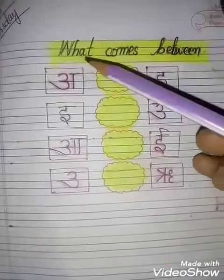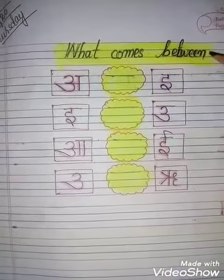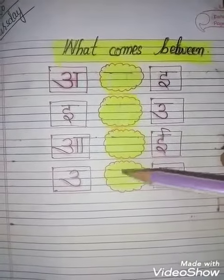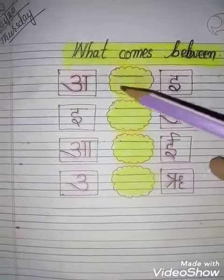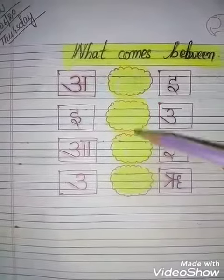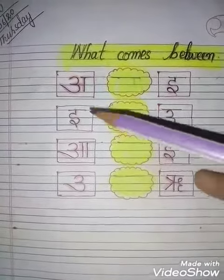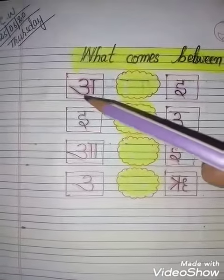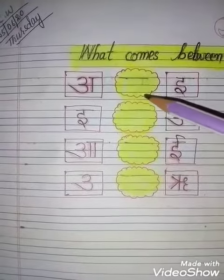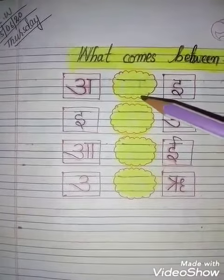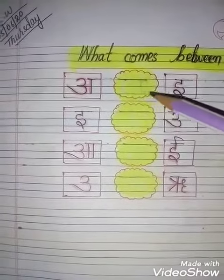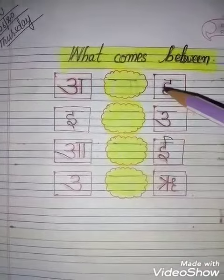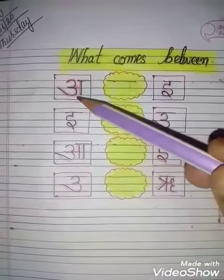Now you will write what comes in the middle — which word, which alphabet will come in between. You will write it here. Now firstly, say this is what — this is on 'C' and 'R'. The next word you will write here.